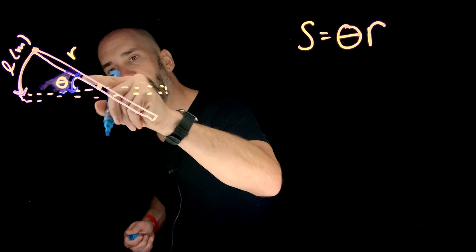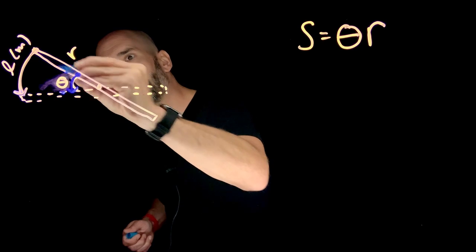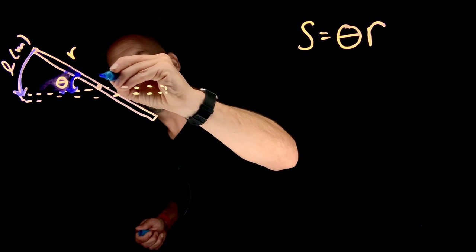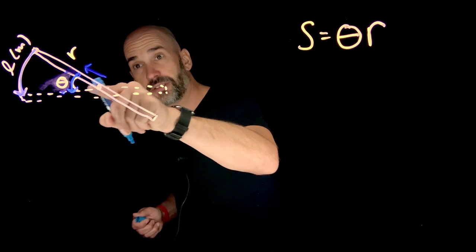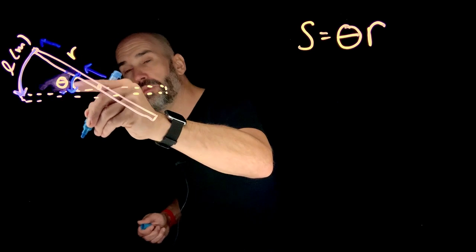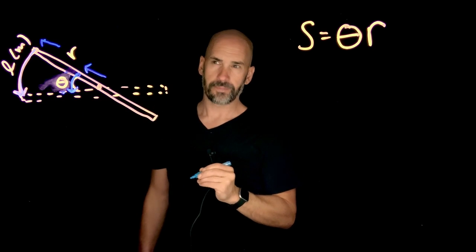This arc length is obviously much less than this. So the bigger the R, the farther you are out from the axis of rotation, the more distance you're actually moving through. Does that make sense?